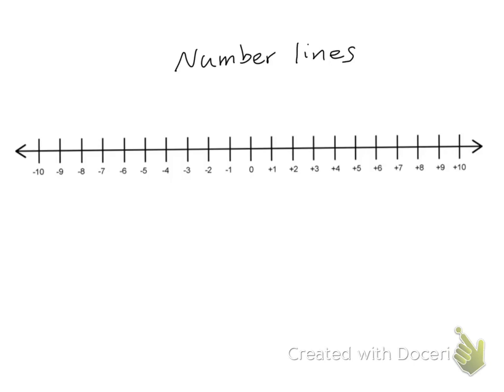A number line is a line that shows numbers at certain distances from zero. On this number line we have the numbers from zero to positive 10 and from zero to negative 10.